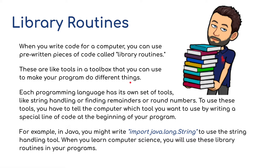Library routines. When you write code for a computer, you can use pre-written pieces of code called library routines. These are like tools in a toolbox that you can use to make your program do different things. Each programming language has its own set of tools. To use these tools, you have to tell the computer which tool you want to use by writing a special line of code at the beginning of the program.